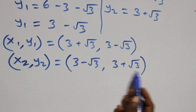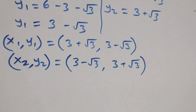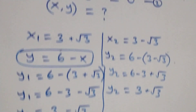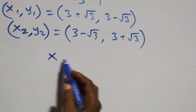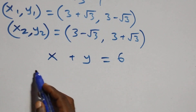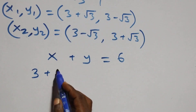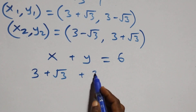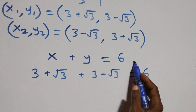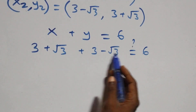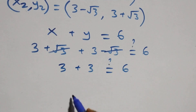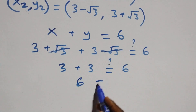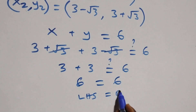Notice that the value of x in the first solution is the value of y in the second, and vice versa — the solutions are symmetric. Checking equation one, x plus y equals six: substituting the first solution, (three plus root three) plus (three minus root three) equals six. The root three terms cancel, giving three plus three, which equals six. Left hand side equals right hand side.